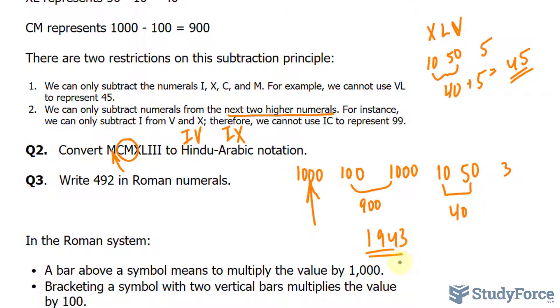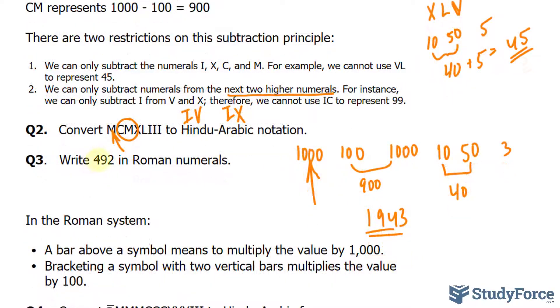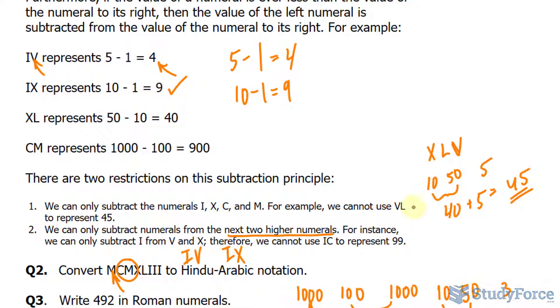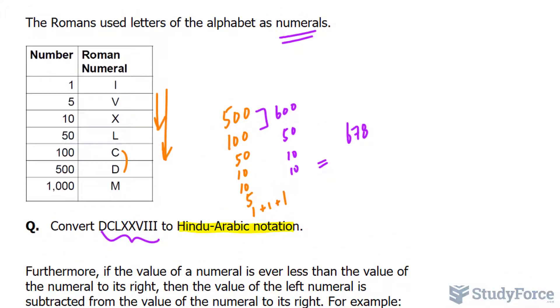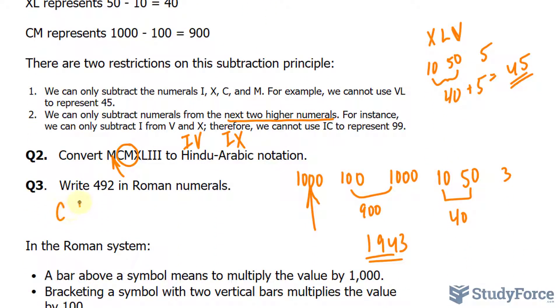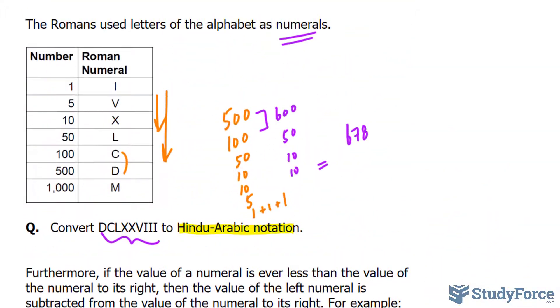In question number 3, we have to write down 492 in Roman numerals. To get 400, we can use that subtraction method where I can take away 100 from 500. I'll put C and D next to each other. These two together make 400. To make 90, I can subtract the 10 from the 100. So I'll put X, C next to each other.